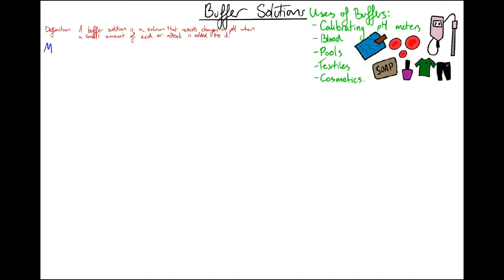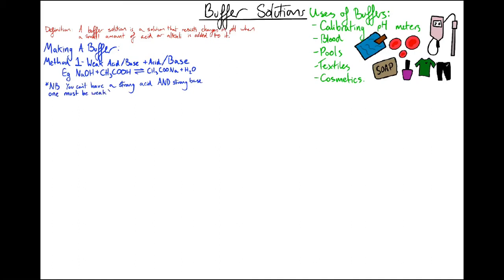There are three main ways of making buffers. You can combine a weak acid or a weak base with a strong acid or a strong base, but you can't use a strong base and a strong acid together. You can combine a weak acid or base with their salts, or you can combine two salts with conjugate base pairs. The key point is that you need a little bit of acid or base left over and a little bit of its salt in order to form an equilibrium.